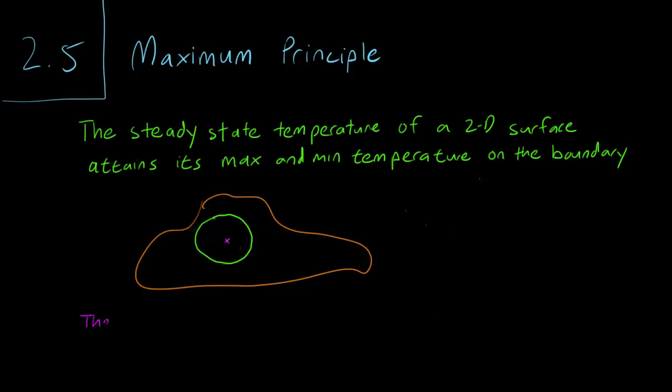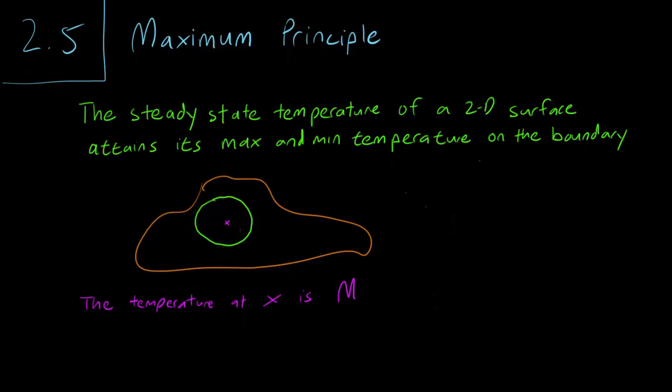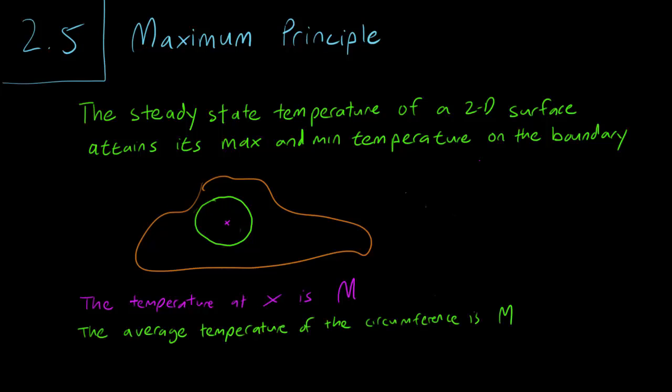Let's say the temperature at X is M. Based on the mean value theorem, we know that the average temperature of the circumference equals the temperature at X, so the average temperature of the circumference is M.